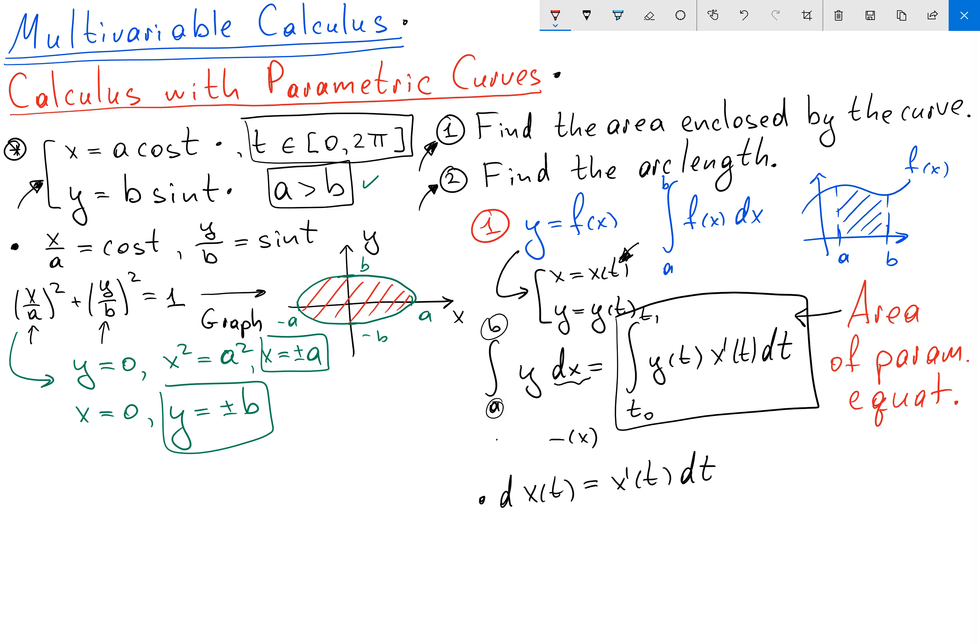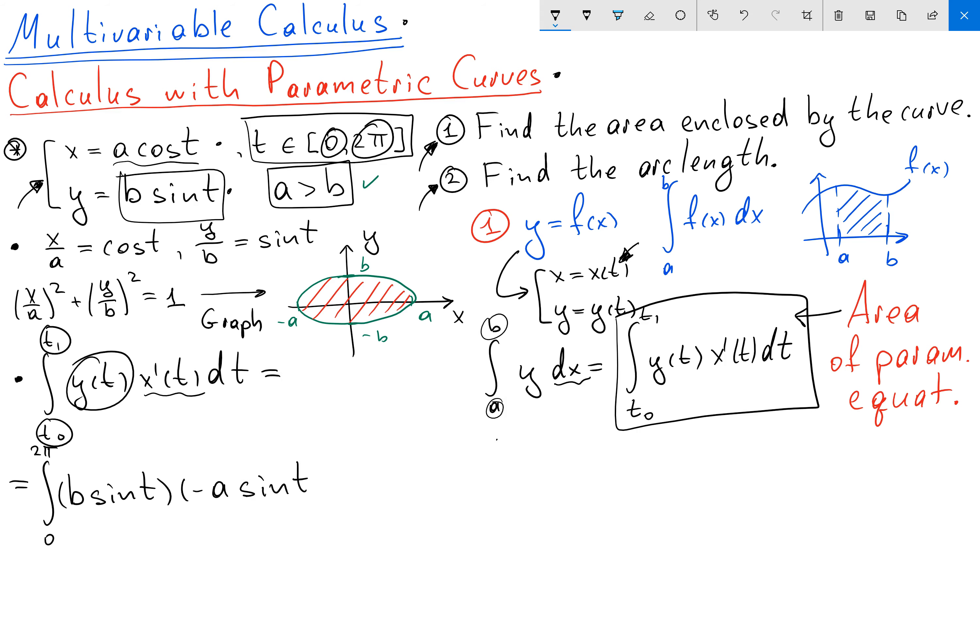So let's apply this formula and let's find the area of our ellipse. So we have integral from t0 to t1. Here we can see that t0 and t1 is just going to be 0 and 2π. So we have integral from 0 to 2π. Our y of t is just b sin t. So we have b sin t. And x prime of t is derivative of x corresponding to t. So it's going to be just minus a sin t. And we have dt.